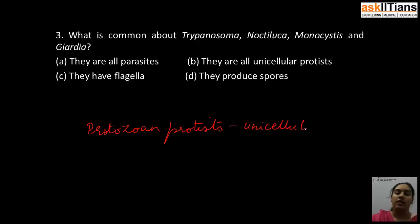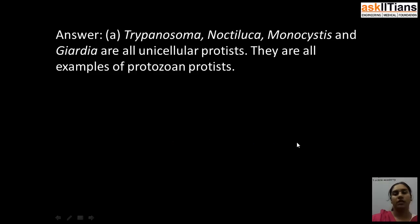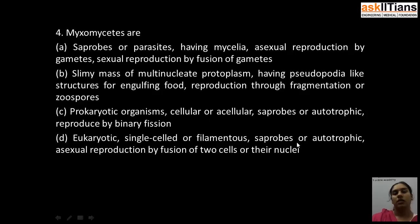Because protozoan protists are unicellular organisms, we can say that Trypanosoma, Noctiluca, Monocystis, and Giardia are all examples of protozoan protists.